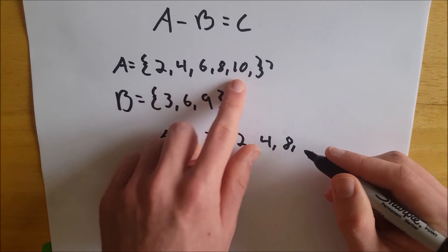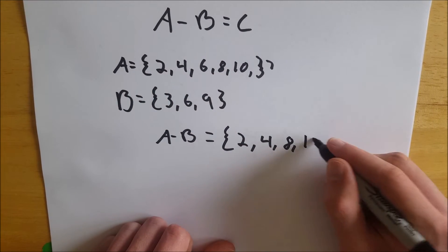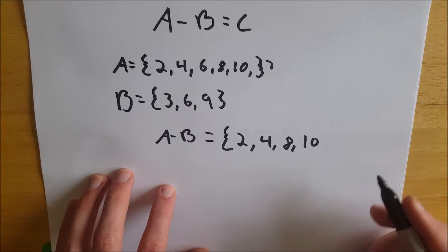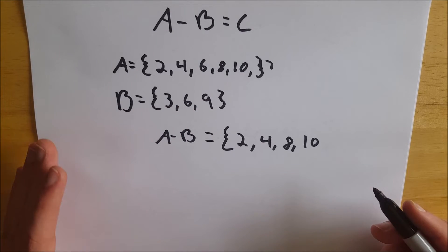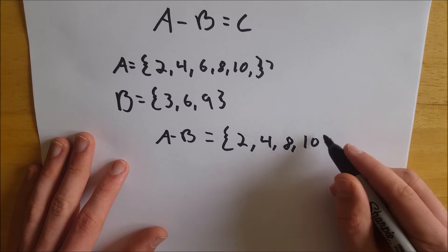8 we get, and then 10 we get. So the only one we lost was 6 because it was the only multiple of 3 that was in B that we were taking away from A.